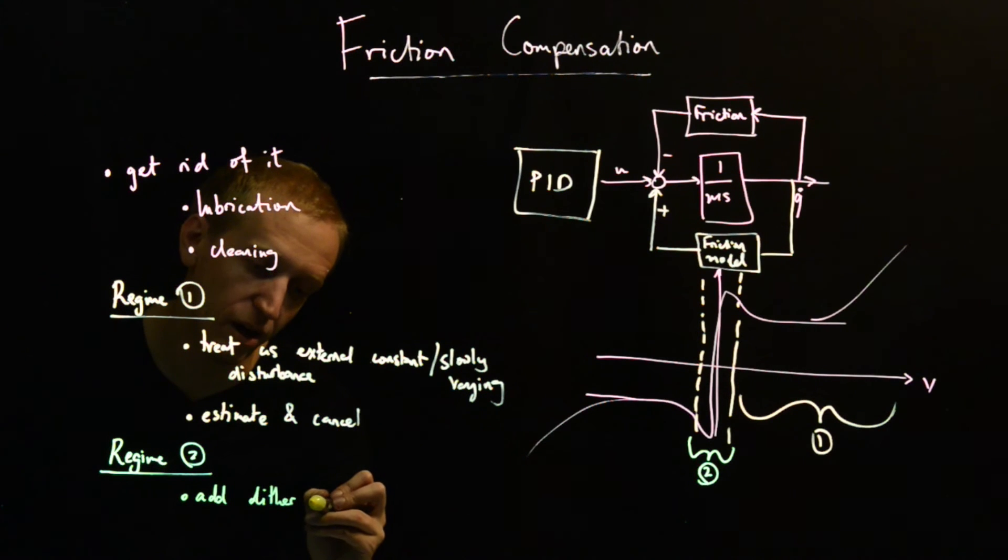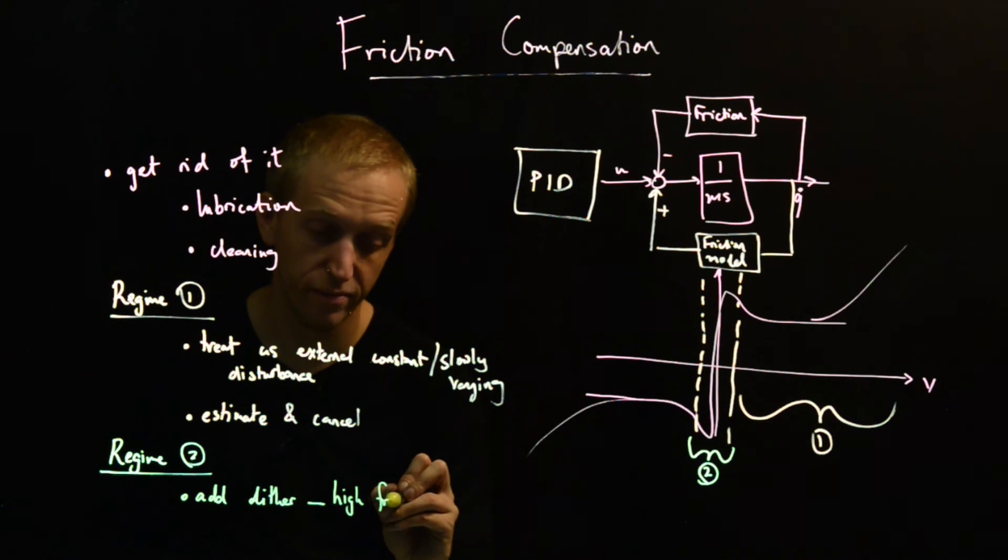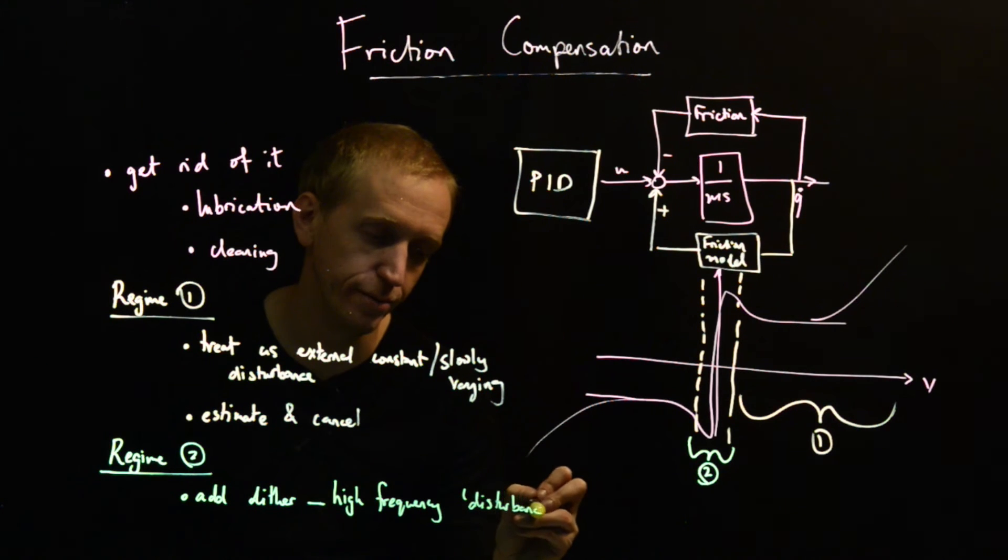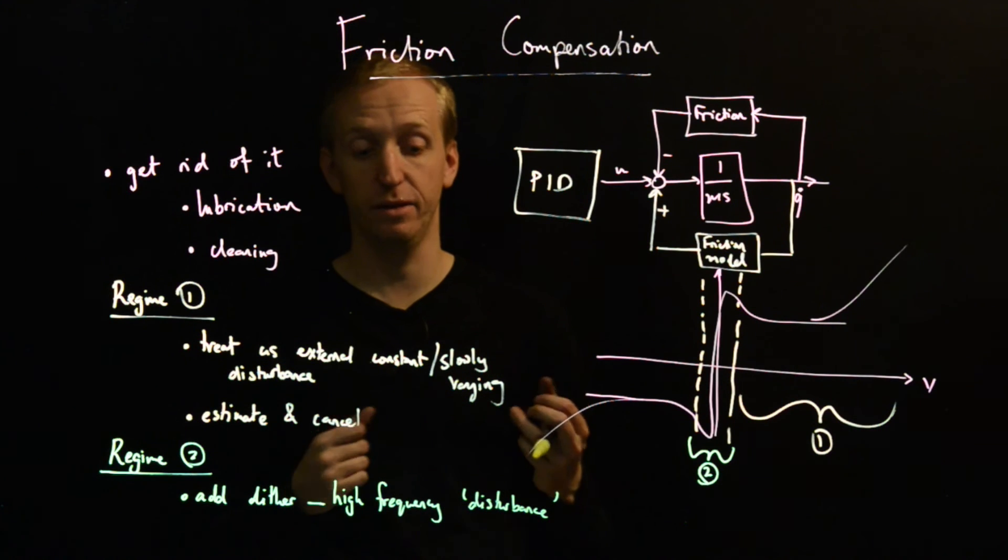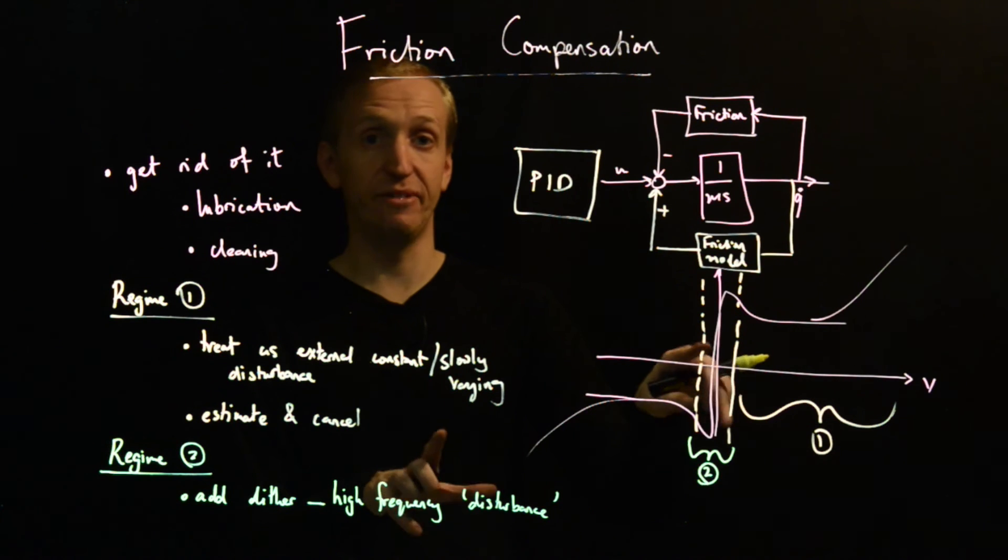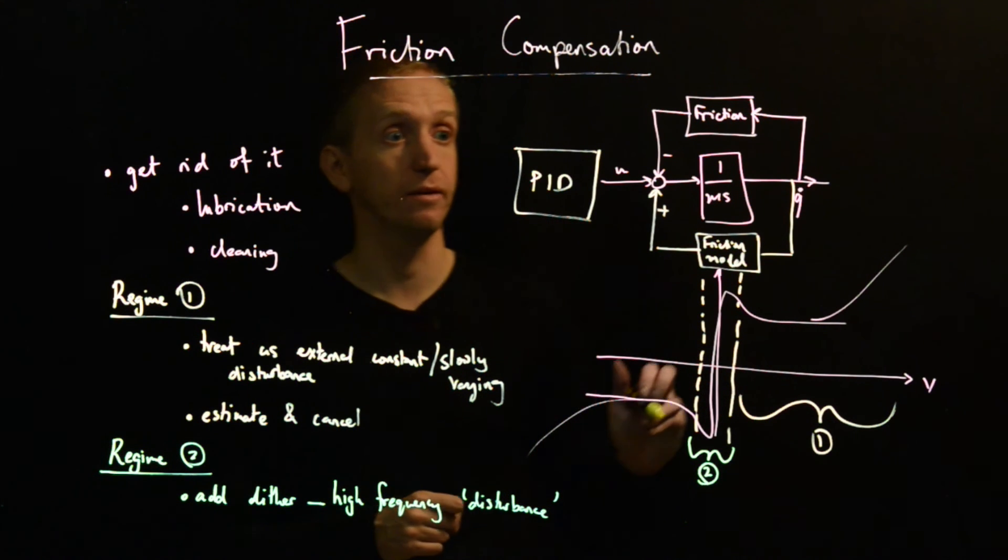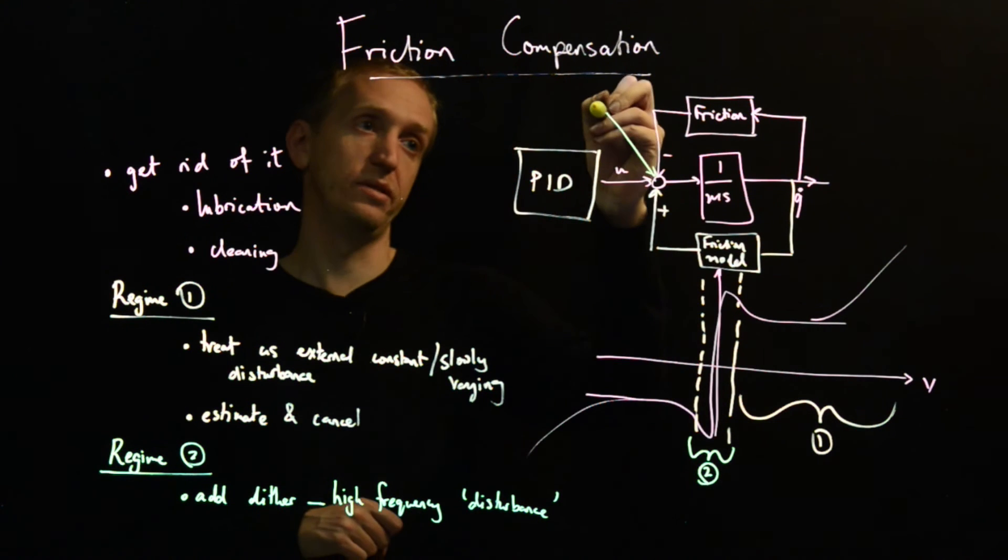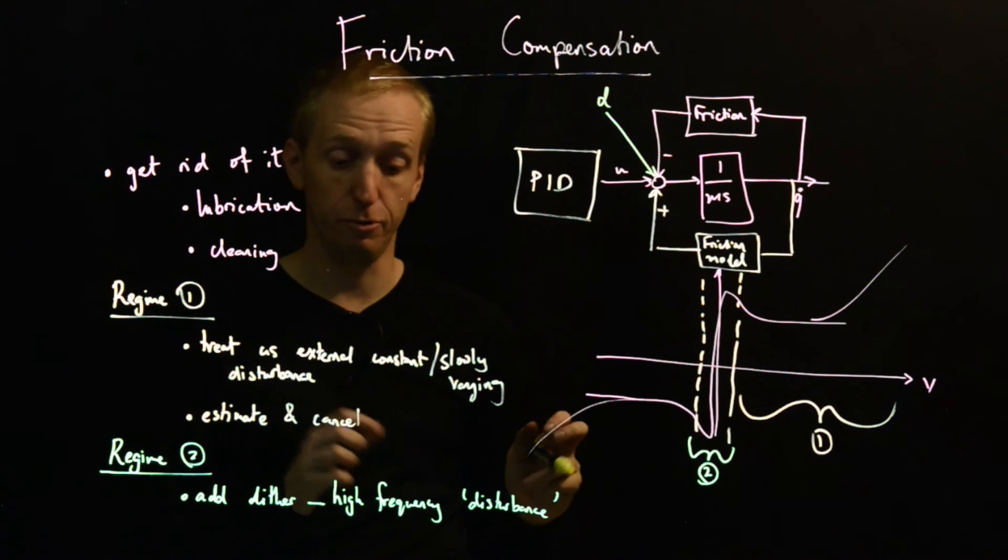You add dither. And this is just a high frequency disturbance. You add it yourself, so it's not something that you don't know, it's something that you're deliberately applying. The purpose of this disturbance is to try and prevent you from ever having zero velocity for very long, to try and prevent these stiction forces from kicking in. We add in a disturbance here, I'll call it D, and this is our dither signal.